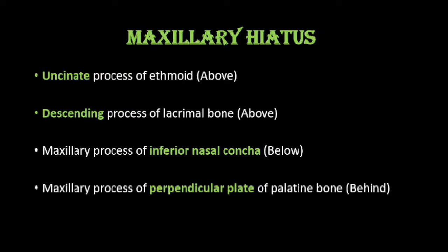The bones that reduce the maxillary hiatus are: from above, the uncinate process of ethmoid and the descending process of the lacrimal bone; from below, by the maxillary process of the inferior nasal concha; and from behind, by the maxillary process of the perpendicular plate of the palatine bone. This is a frequently asked question, so please learn all four bones that reduce the maxillary hiatus in an articulated skull.